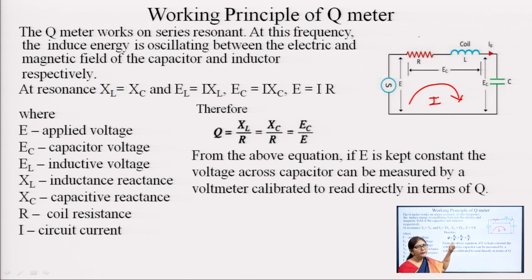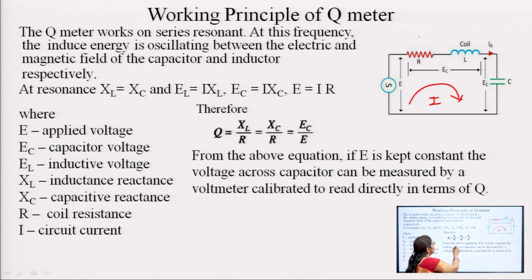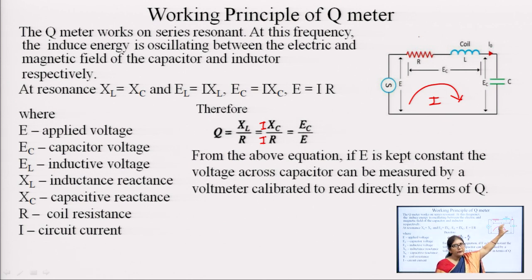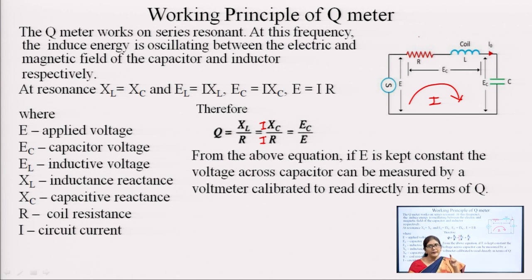The quality factor Q = XL/R, and since XL = XC, it is XC/(I·R). Multiplying numerator and denominator by I gives EC/E. So if E is constant, Q is proportional to EC. We can connect a meter across the capacitor and calibrate it in terms of Q, so the meter placed across the capacitor will directly measure the value of Q.